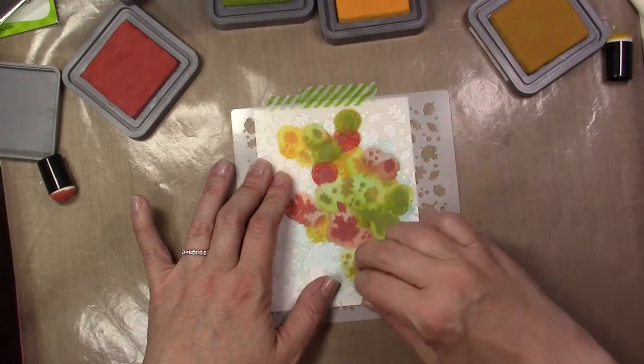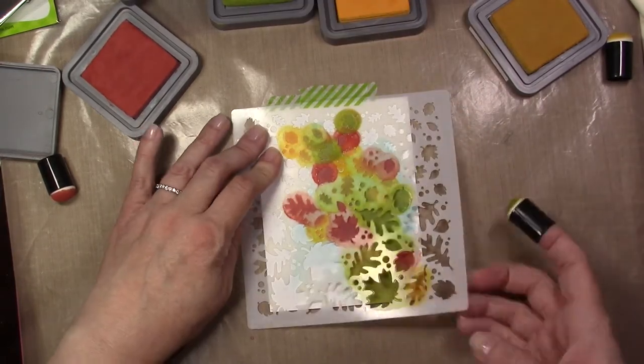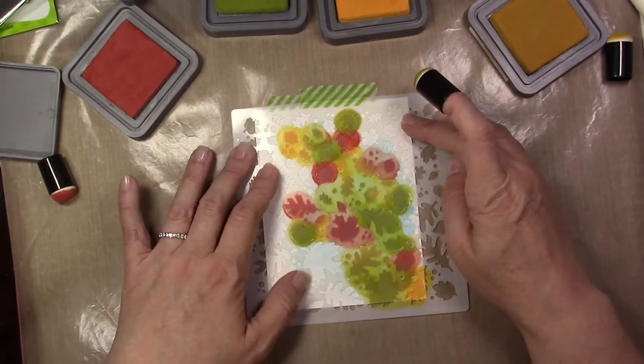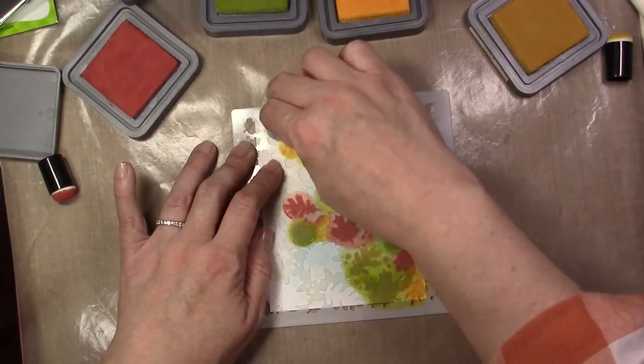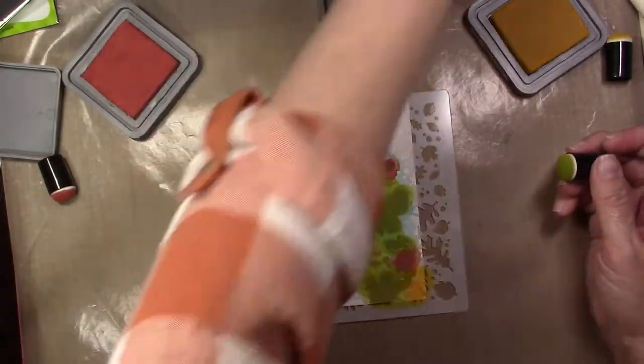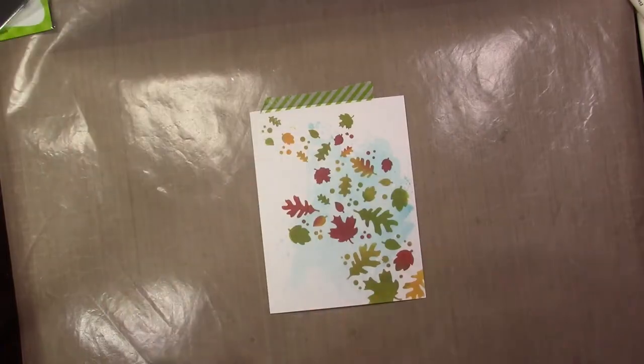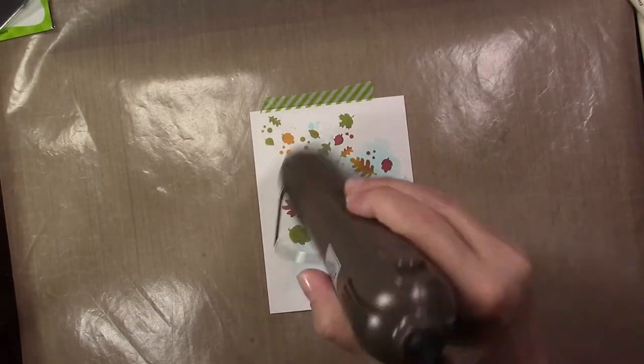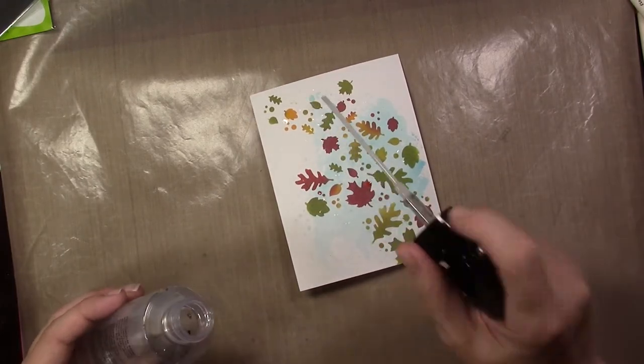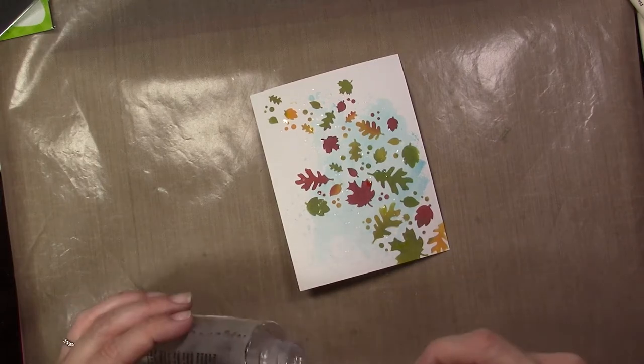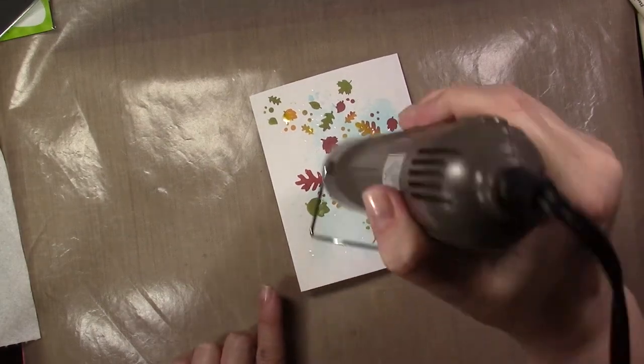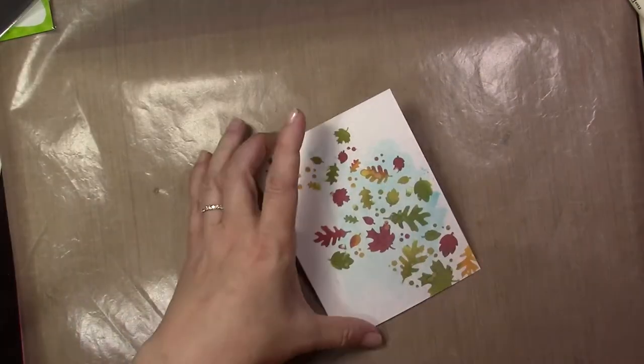This is a pigment based ink so it will smear very easily so once I have that heat set then I'm going to go ahead and add a few splatters of water to it and instead of dabbing the water up like I normally would with a paper towel I'm actually going to just straight heat set the water and that's going to help give that oxidized effect that the inks do. Okay so go ahead and finish that up just by heat setting that there.